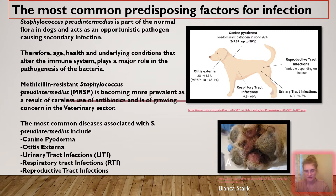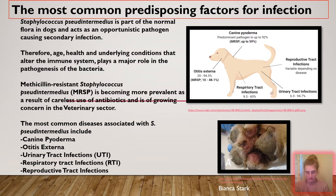As a result of the careless use of antibiotics to treat these infections, methicillin-resistant Staphylococcus pseudintermedius, known as MRSP, is becoming more prevalent and is of growing concern in the veterinary sector. This strain of S. pseudintermedius bacteria is transmitted between dogs through direct or indirect environmental transmission.